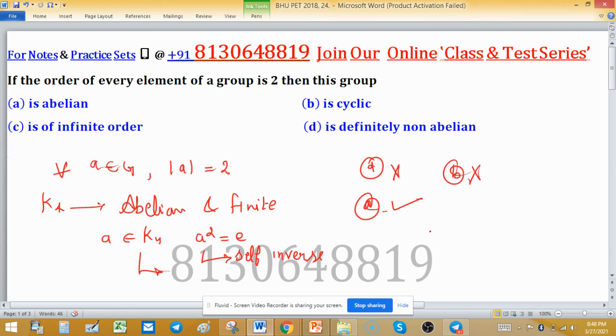The order of this is 4 elements only. K4 contains 4 elements. So option c is also discarded. So the possibility of option a is now confirmed, and a is the true choice.